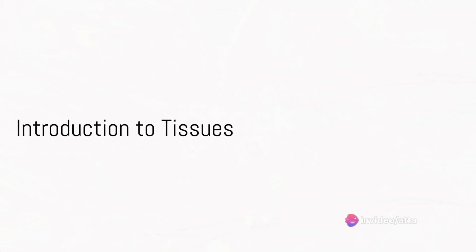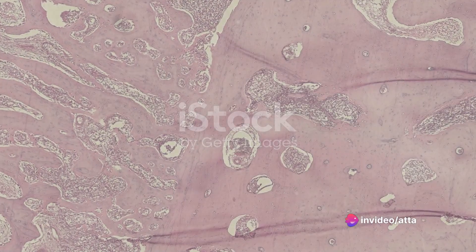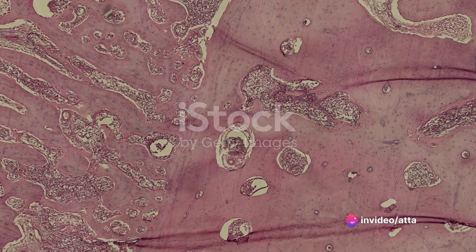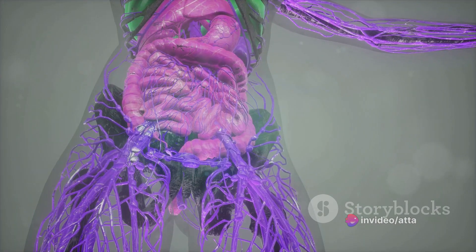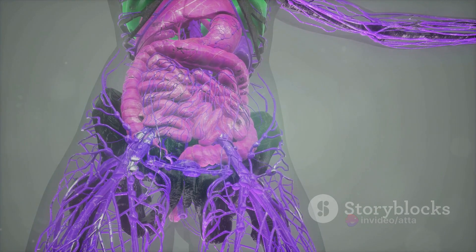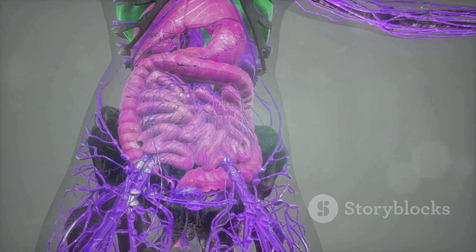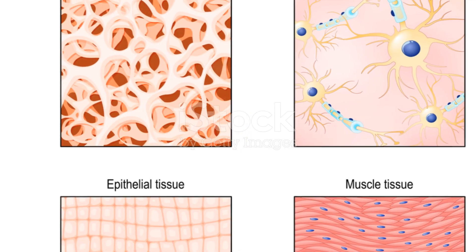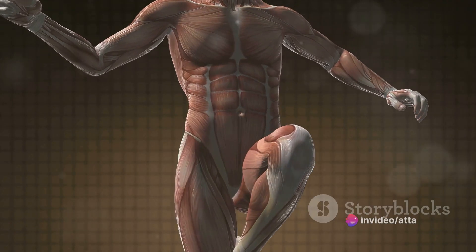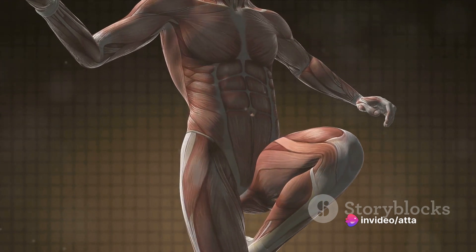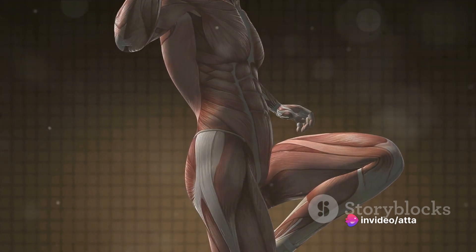Have you ever pondered the marvels of our body, how it operates at a cellular level? It's a fascinating world within us, with different types of tissues working in harmony to keep us alive and well. Today, we delve into this microscopic world to understand the four primary types of tissues in the human body and their subtypes.